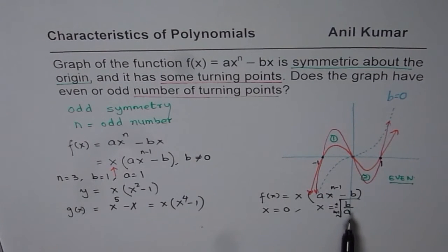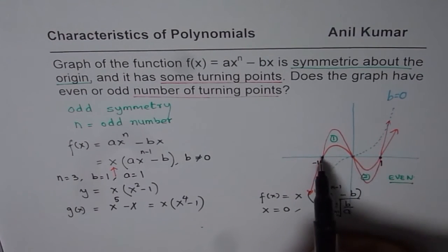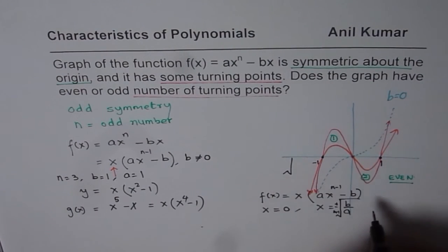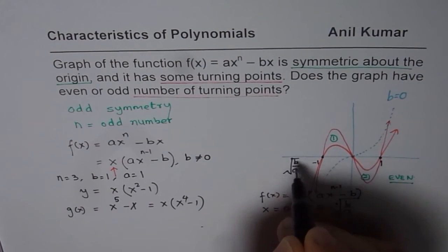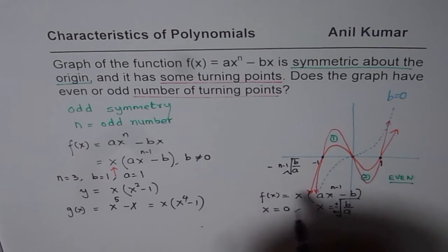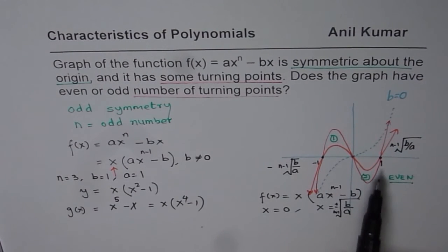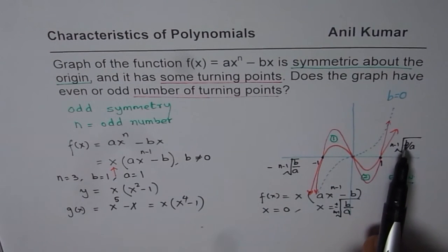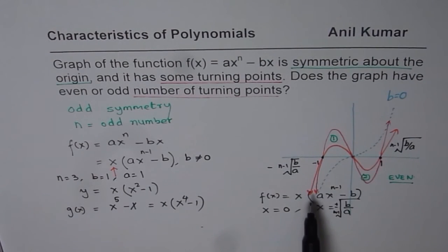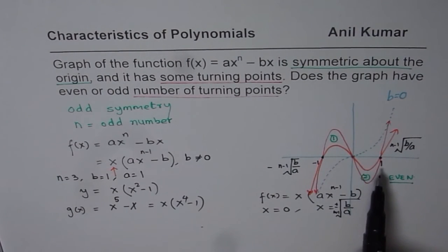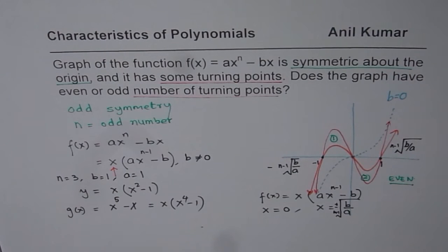So in general, for a function like this, we will have a graph where these zeros will be at plus and minus the n minus 1th root of b over a. So those will be the zeros. Depending on the value of b and a, these points will change. If n is large, then it becomes steeper. So we are just experimenting with b and a as 1. Therefore it was 1. But if b is 2 and a is 1, in that case b is square root of 2.